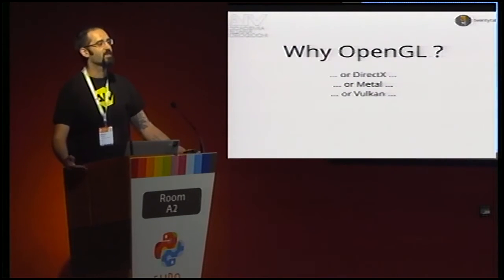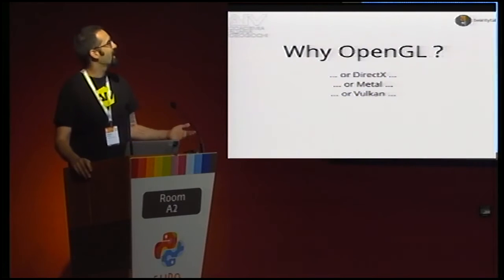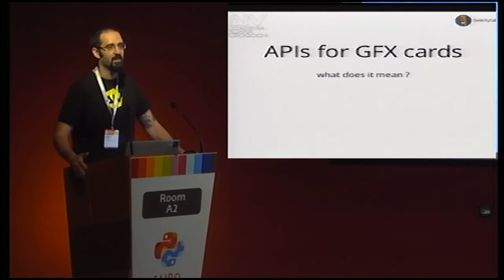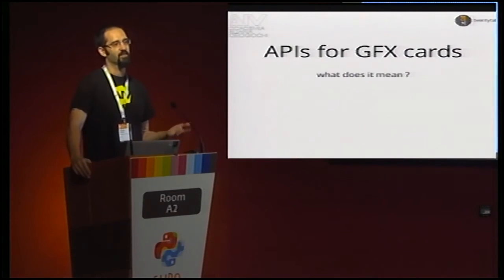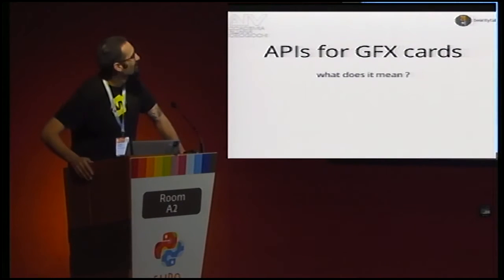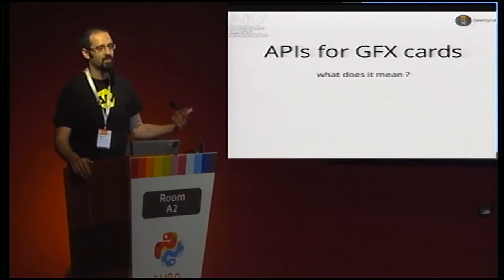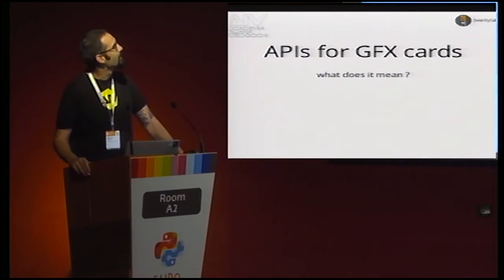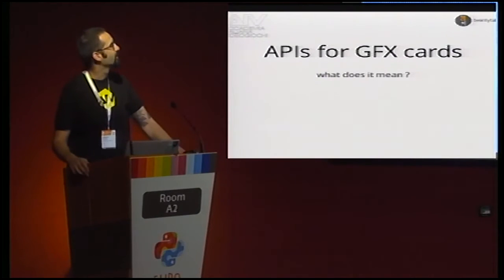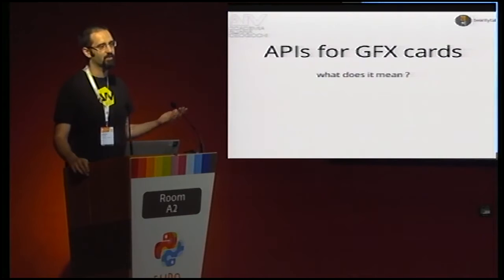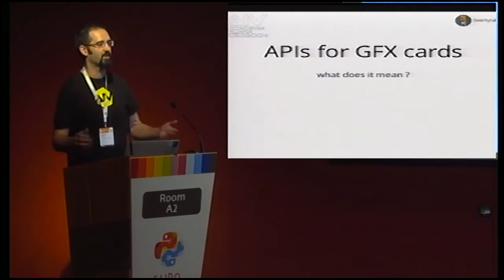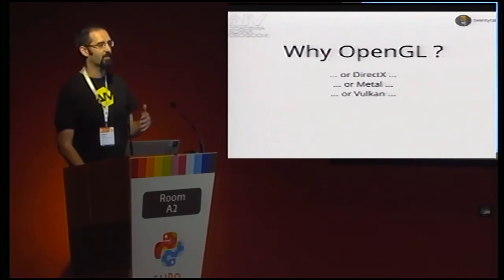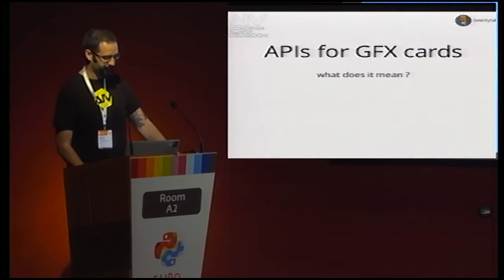Today I would like to show you how to use OpenGL for making your games in Python. First of all, why do you need OpenGL, DirectX, Metal, or Vulkan for writing your games? Those are APIs for your graphics cards. Hardware vendors invest billions in their technologies, especially now that GPUs are the hot topic in the hardware world. Every vendor has its internal way of programming the hardware, so we need an abstraction from the driver to the way we speak with the graphics hardware. OpenGL, DirectX, Metal, and Vulkan are all libraries allowing us to interface with the driver of the graphics card.